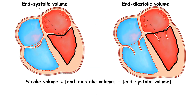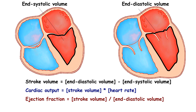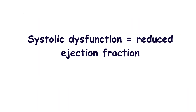Stroke volume is the volume of blood which is squeezed out with each heart contraction. It is the difference between end-diastolic volume and end-systolic volume. Ejection fraction is an important index that well describes systolic function. It is equal to stroke volume divided by end-diastolic volume. In the case of systolic dysfunction, the ejection fraction is reduced due to impairment of ventricular pumping function.